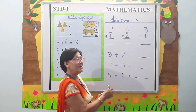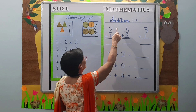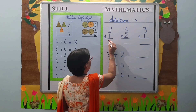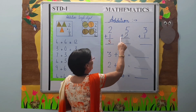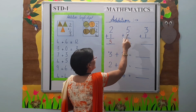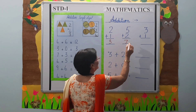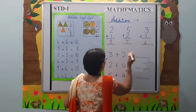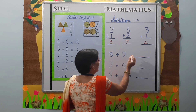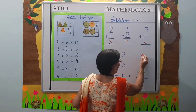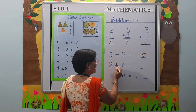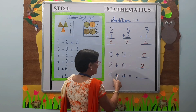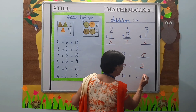Now children, let's do a few addition sums. 2 plus 1 is 3. 5 plus 2 is 7. 3 plus 1 is 4. 3 plus 2 is 5. 2 plus 0 is 2. 5 plus 4 is 9.